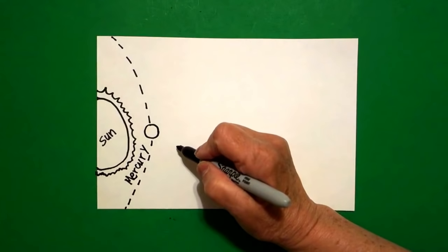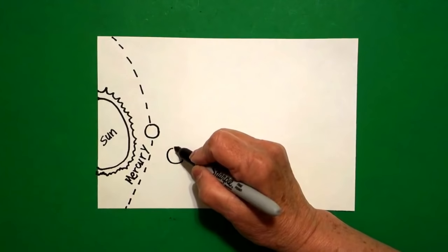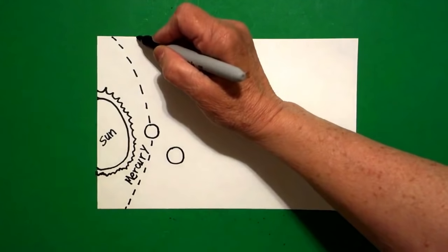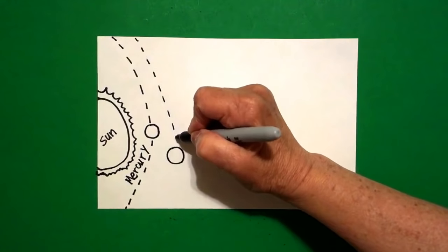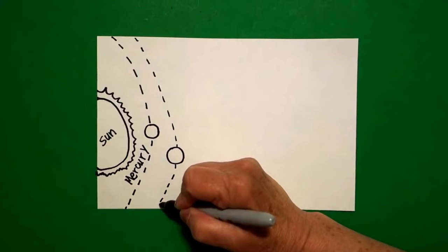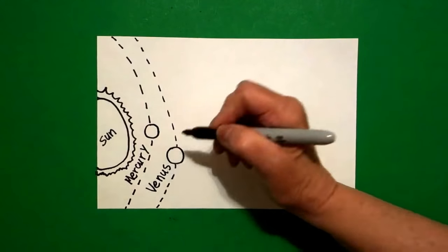Now, the next planet I'm going to do is Venus. So I come down a little bit and I draw another circle, a little bit bigger. And I can start from the top and bring that dotted line all the way down to Venus, jump over, and bring it in. And that's V-E-N-U-S.